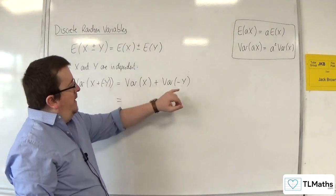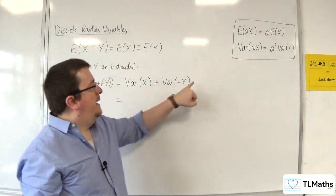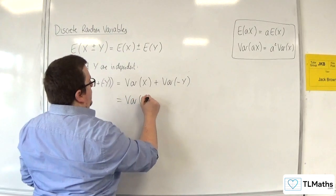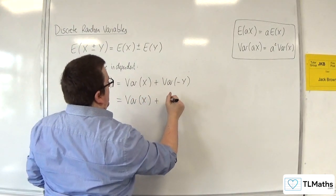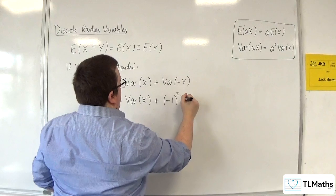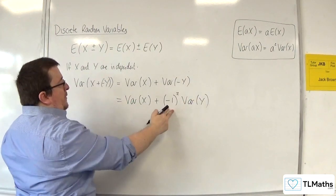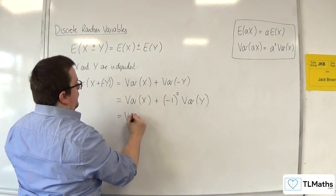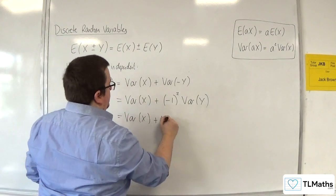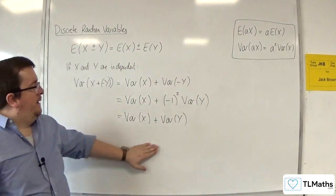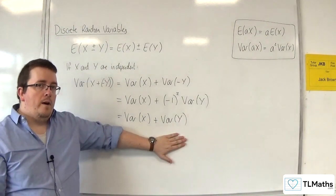Now, in this case, again, the a is minus 1. So this is Var of X plus, and it's the minus 1 squared Var of Y. So the minus 1 squared is just 1. So we actually get that Var of X minus Y is Var of X plus Var of Y.